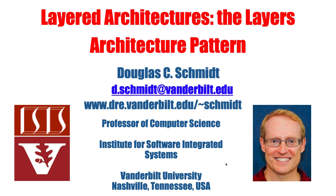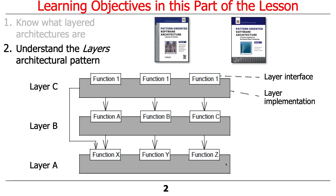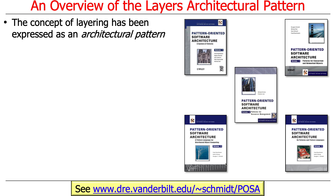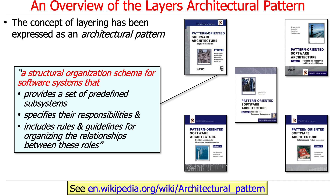Now that you know a little bit about what layering is as an abstraction, let's talk about a codification of this abstraction in the form of something called the layers architectural pattern. This concept of layering is so pervasive, especially in computer systems, that someone actually took the time to document it as a pattern — specifically an architectural pattern. An architectural pattern is a structural organizational schema for software systems that provides a set of predefined subsystems, specifies their responsibilities, and includes rules and guidelines for organizing the relationships between these roles.